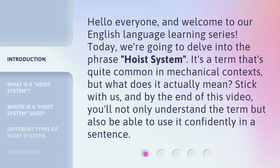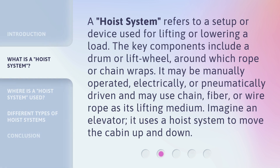Stick with us, and by the end of this video, you'll not only understand the term, but also be able to use it confidently in a sentence. A Hoist System refers to a setup or device used for lifting or lowering a load. The key components include a drum or lift wheel, around which rope or chain wraps.